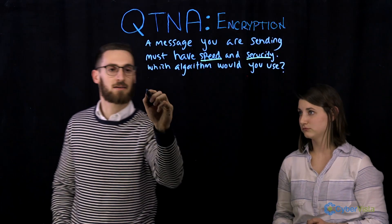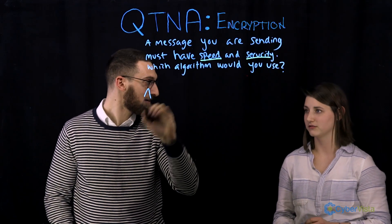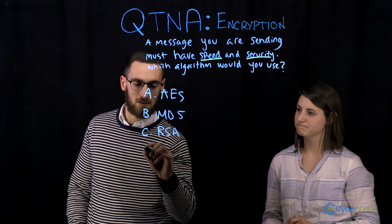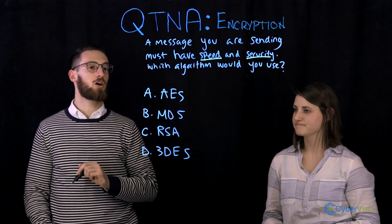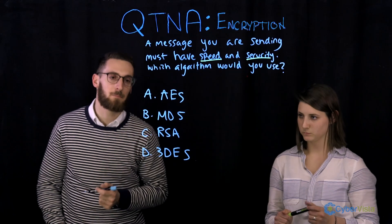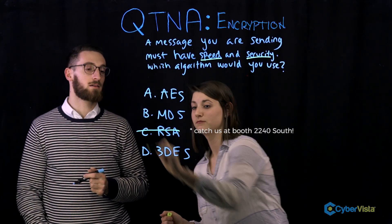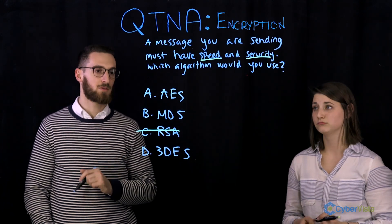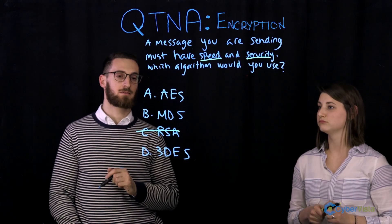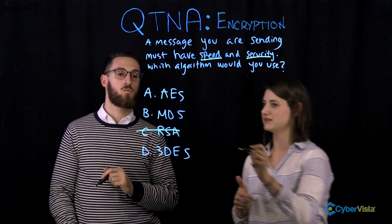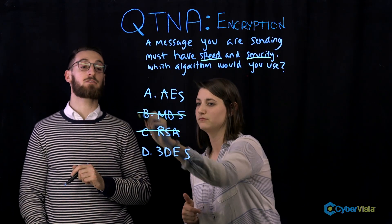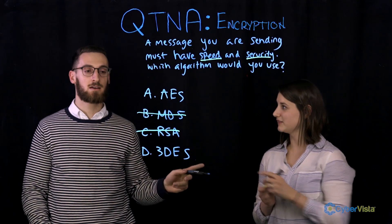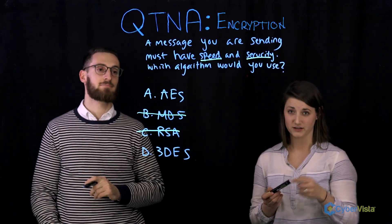Let's try it. Can we see the answer choices? Which ones can we eliminate right off the bat? RSA — because it's asymmetric, which is slow. And what about next? MD5, because MD5 is a hashing algorithm. And when I say hashing, you say? Integrity, not confidentiality. Nice.